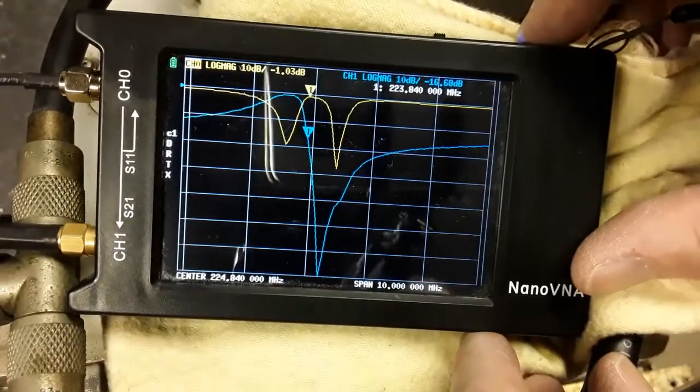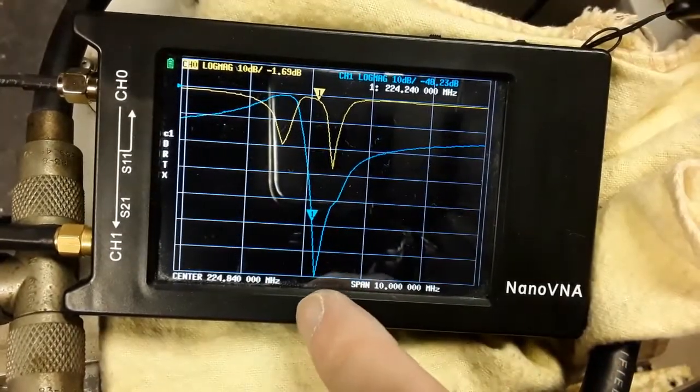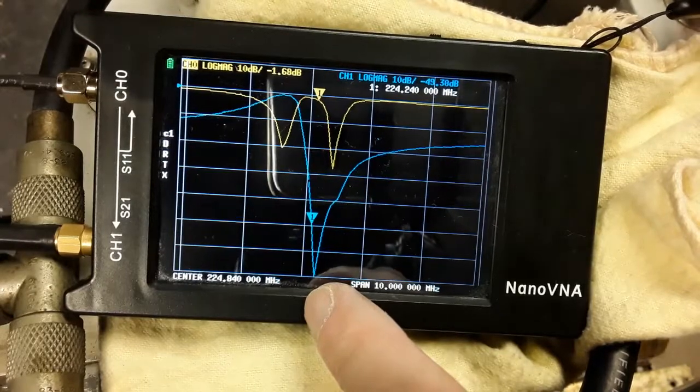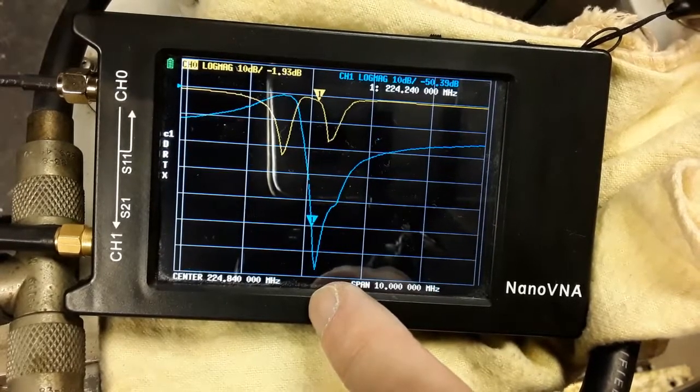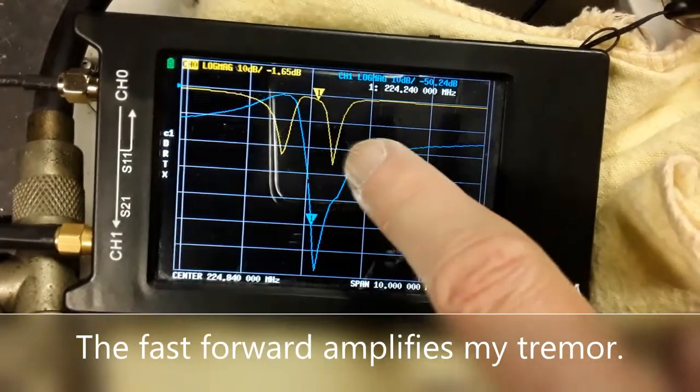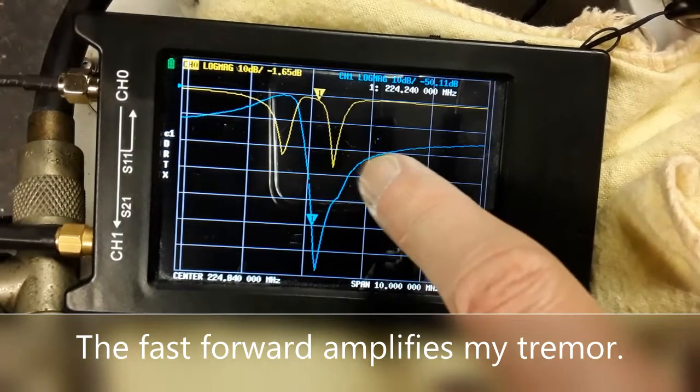Here I'm trying to get the band reject notch on frequency and create the deepest notch that I can. Notice how the bandpass adjustments affect the SWR notch depth and frequency.